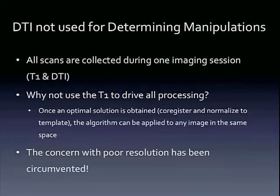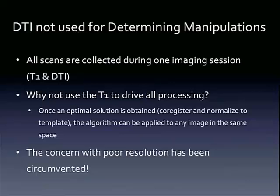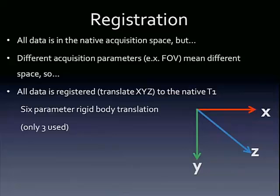So in this project, we simply didn't use the DTI to compute any of our manipulations, because all of the scans — the T1s and the DTI data — were acquired during the same scanning session, which means they're in the same native space and same native orientation. So all we have to do is compute our deformations on the T1 data, which has much higher resolution. The one thing we have to consider is that because the diffusion imaging and T1 scans have different acquisition parameters — most obviously the field of view is different — they don't look the same when you first open them up, so we register them so they're in the exact same spot.